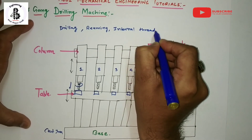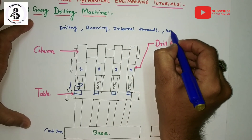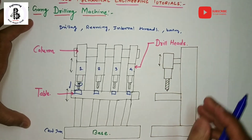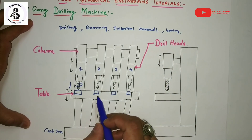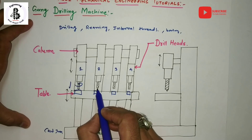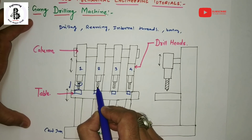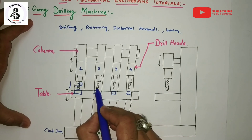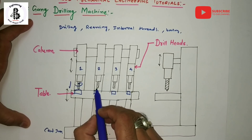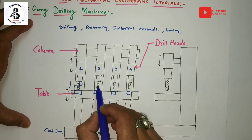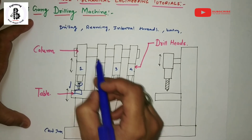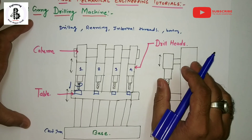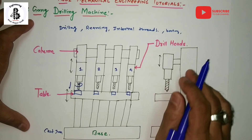You can also make internal threads, perform tapping, and boring operations. You can perform any kind of operation according to your requirements — just change the tool for the particular operation. If you are performing boring, simply change the boring tool in place of the drill bit.